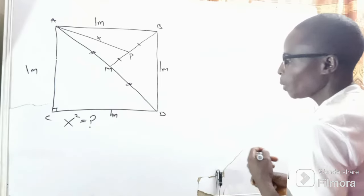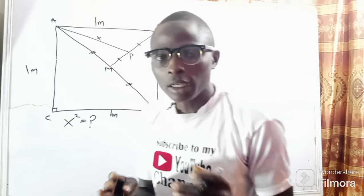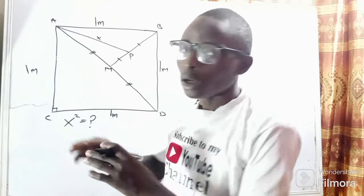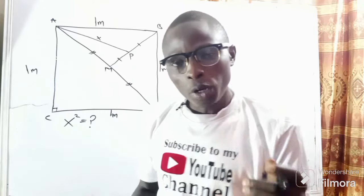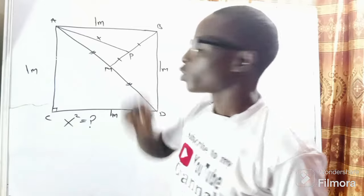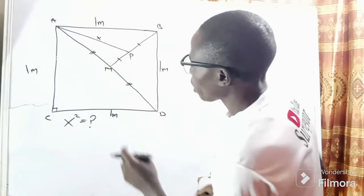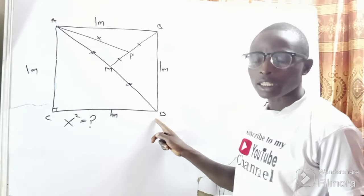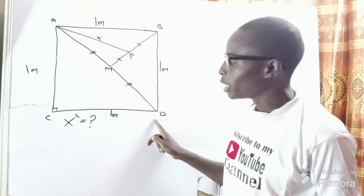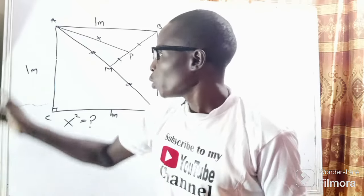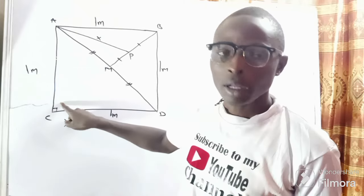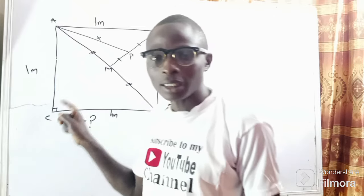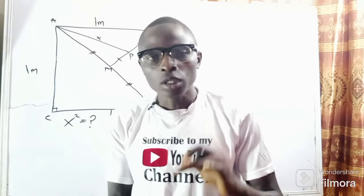Let me start working from whole to part — I'm going to start solving for x collectively and narrow my solution to the area of focus. When I consider triangle ACD, I find that it is an isosceles right-angle triangle. Since we have two sides and the included angle of 90 degrees, we can comfortably use the Pythagorean theorem, which states that the square of the hypotenuse equals the sum of the squares of the adjacent and opposite sides.